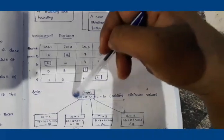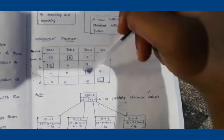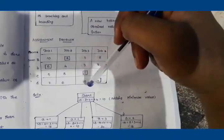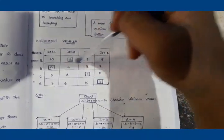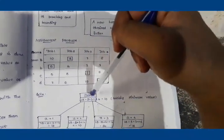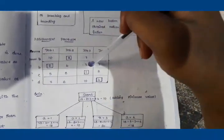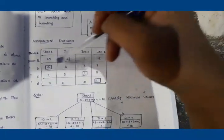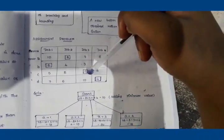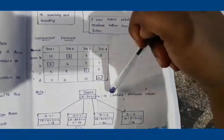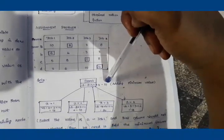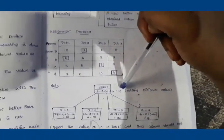To find the lower bound for the root node, we draw the root node and calculate the lower bound (LB). In each row we find the minimum value: the first row minimum is 2, the second row minimum is 3, the third row minimum is 1, and the fourth row minimum is 4. Summing these gives 2+3+1+4 = 10, which is the lower bound value for the root node.